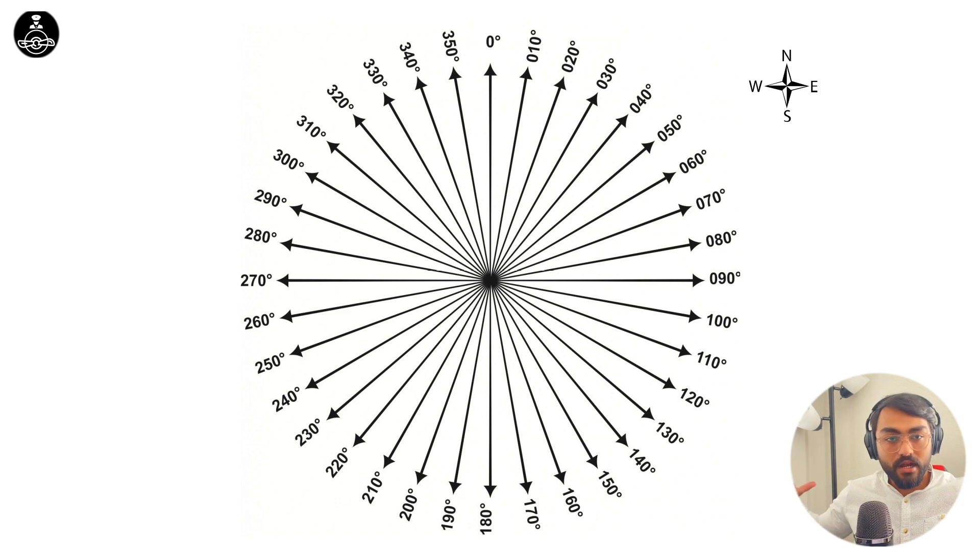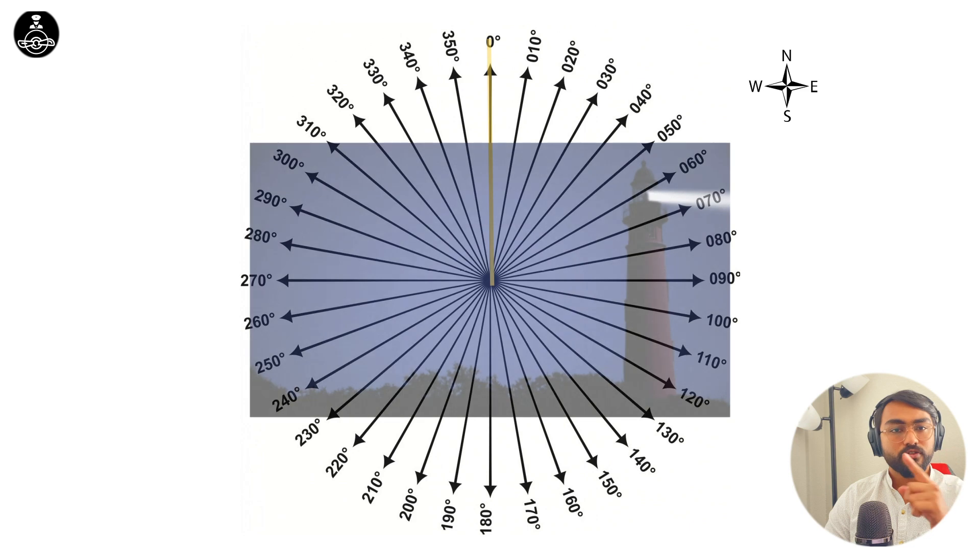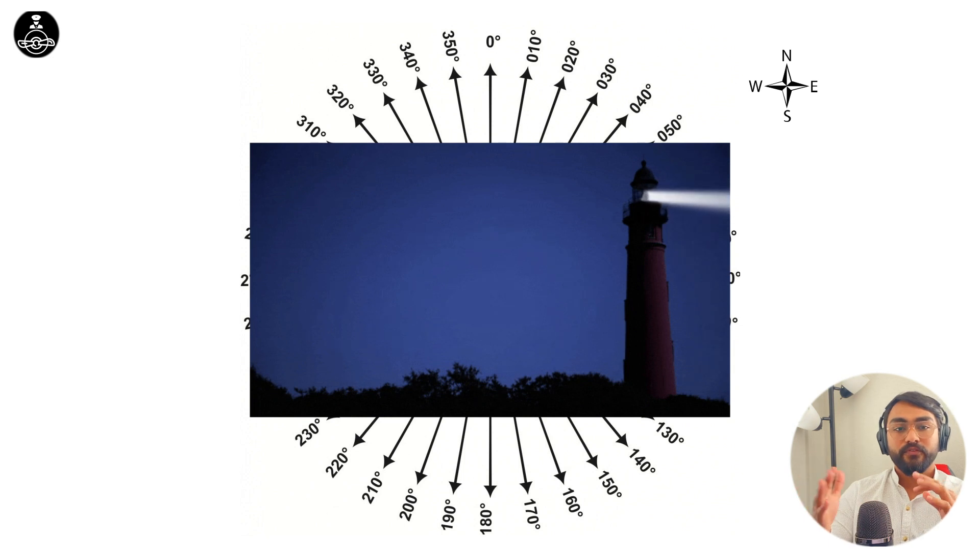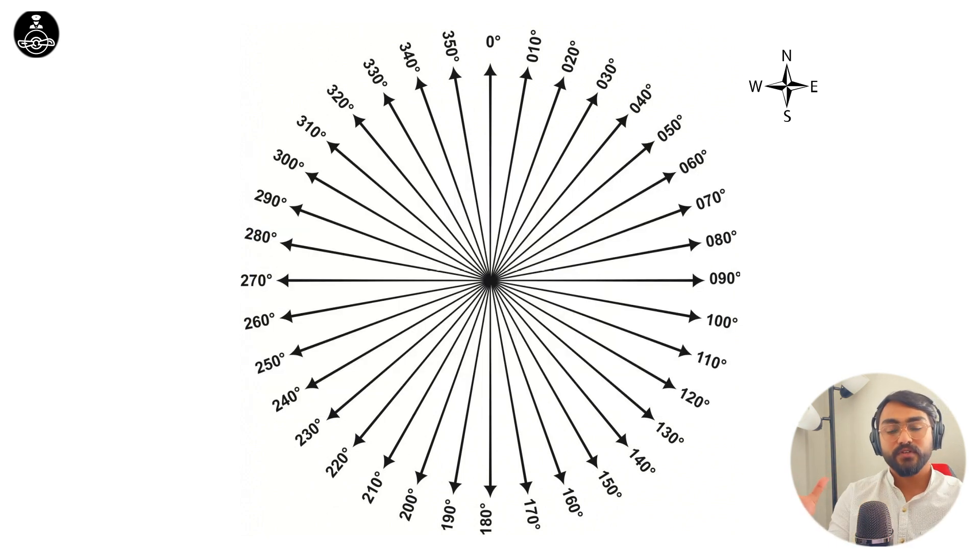rotates constantly around the VOR like a lighthouse. A lighthouse also keeps moving around and provides light in different directions at a given point in time. The variable phase is constantly moving. The reference phase is emitted whenever the variable phase is in the north direction - when the variable phase comes to north, the reference phase signal is emitted, and then the variable phase continues to move. Now let's take a simple example.